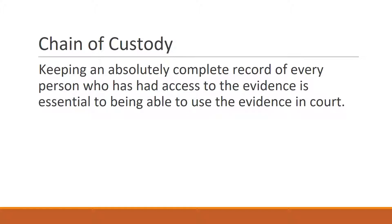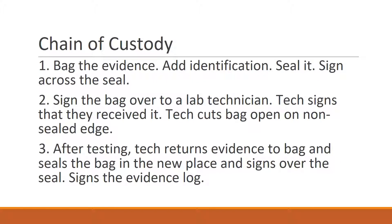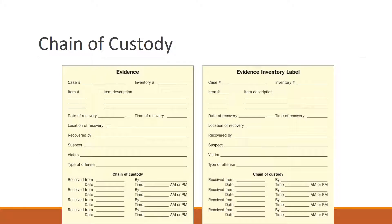Chain of custody is keeping an absolutely complete record of every person who has had access to the evidence — not just who opened it, but everyone who carried it from one place to the next. This is essential for using evidence in court. You bag the evidence, add identification, seal it, sign across the seal, and sign it over to a lab technician. The tech signs that they received it, cuts open the bag on the non-sealed edge, and after testing, reseals the bag in a new place, signs over the seal, and signs the evidence log.